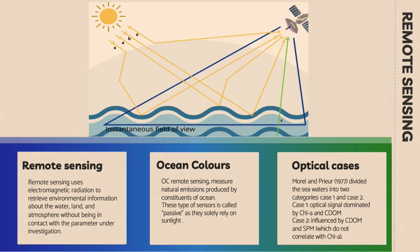The way I investigated this is through remote sensing, my favorite part. Remote sensing uses electromagnetic radiation to retrieve environmental information about the land, water, and atmosphere, and its particularity is that it can do so without being in contact with the parameter under investigation. Ocean color sensors measure natural emissions produced by the ocean and are called passive sensors, basically like a camera, because they solely rely on sunlight. The sunlight arrives at the water, gets scattered multiple times, and reaches the sensor, which understands which particles are in the water and at what concentration. An important consideration is atmospheric correction, because scattering also occurs in the atmosphere, so you must ensure your data only reflects scattering that happened in the water.